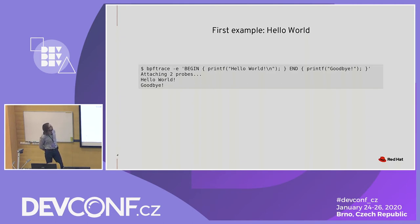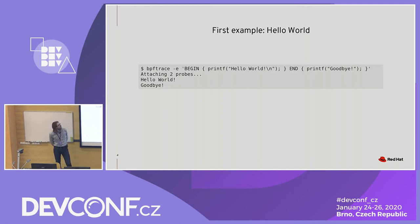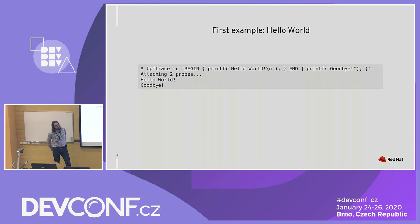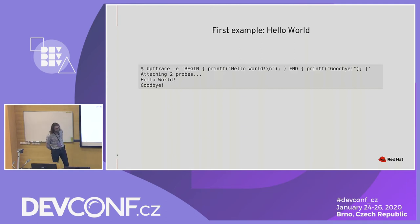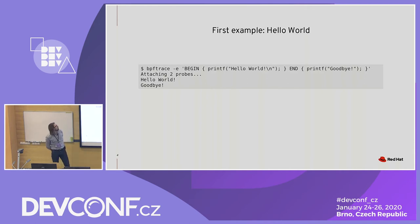So let's see a little example — the classic Hello World. It's pretty simple, but you can already see a couple of features of the language. First, you have the BEGIN and END statements. Those are prefixes for blocks of code that are going to run, as you probably guessed, at the beginning and the end of your tracing session. Also, you can see that BPF trace offers a classic C-style printf function. This is one way to invoke BPF trace on the command line, with the command directly after the -e option.